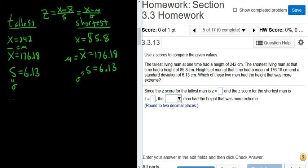Okay, so let's do tallest first. So z is equal to x, so 242, minus the mean, so 176.18, divided by the standard deviation. So this is for the tallest. So let's type it into the calculator.